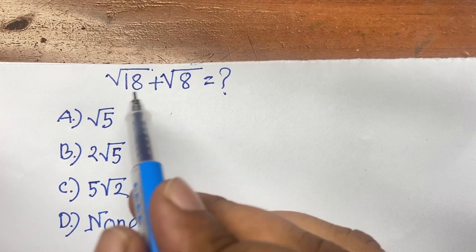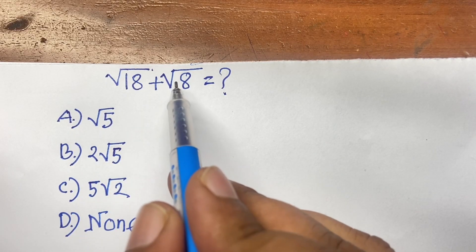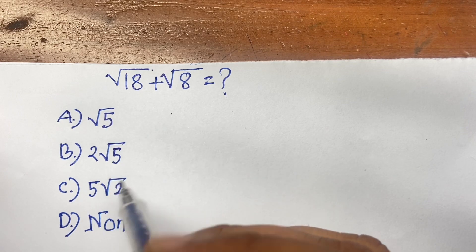Hello everyone. How to solve this radical math problem? This question is square root 18 plus square root 8. We are finding out what is the right answer. Here are 4 options.